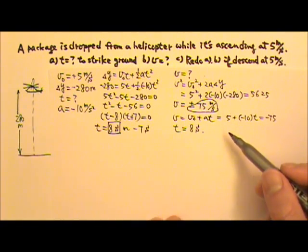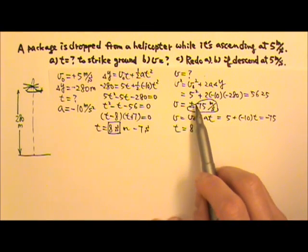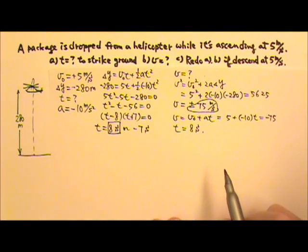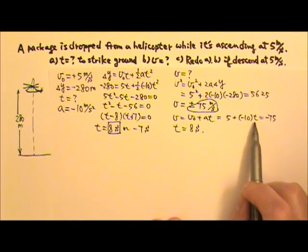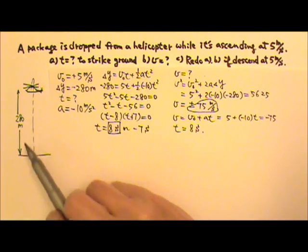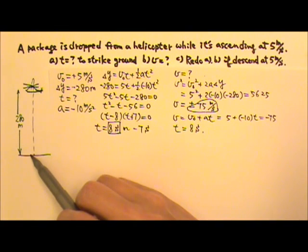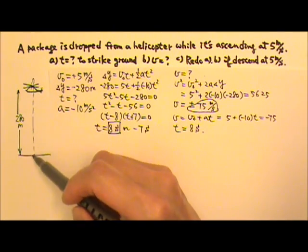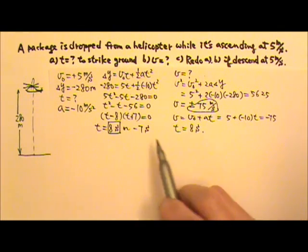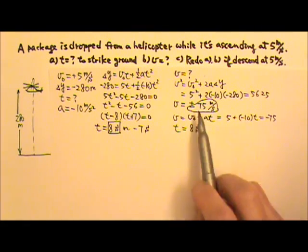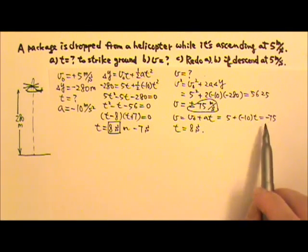If by mistake you use positive 75 meters per second for the final velocity, what answer would you get? Using positive 75 equals v₀ plus at, you would get negative 7 seconds — because if the package started from below going upward at 75 m/s, it would have 5 meters per second going upward by the time it reaches the release point. So if you get a negative time, you know you've gotten the sign wrong and must use negative instead of positive for the final velocity.